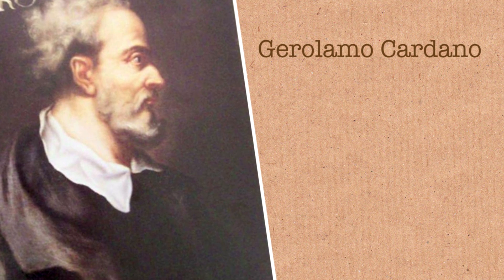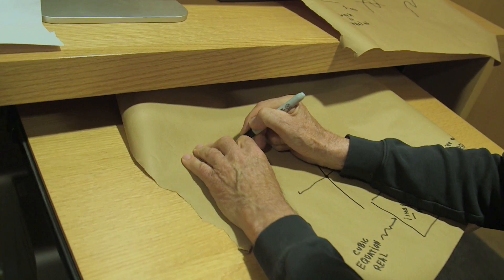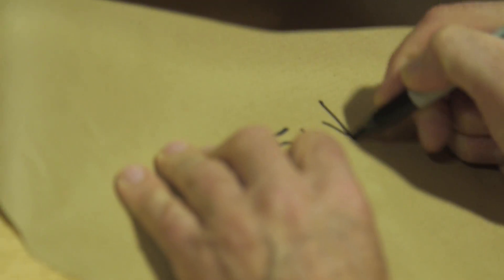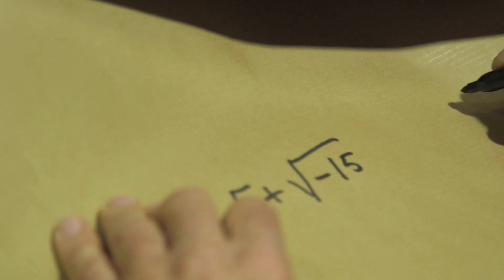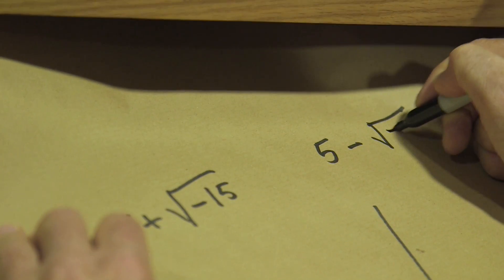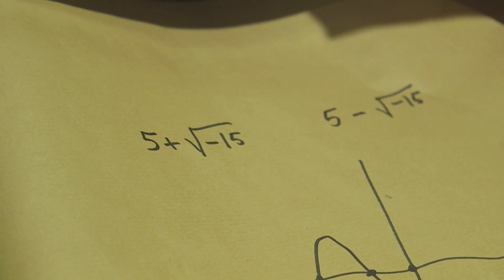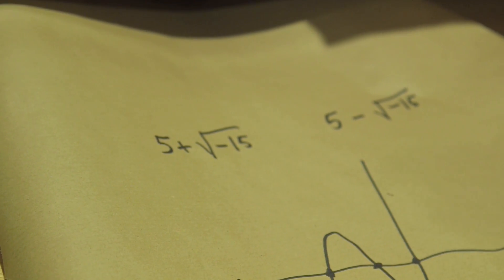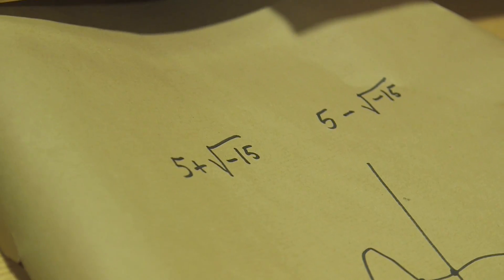In fact, he had to use the numbers 5 plus the square root of minus 15, and 5 minus the square root of minus 15, in order to solve his equation or to deal with this issue that he writes.